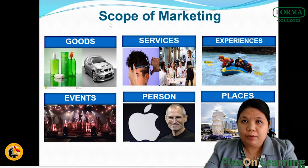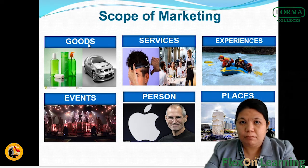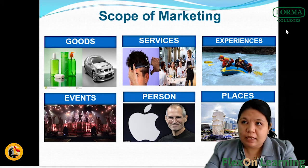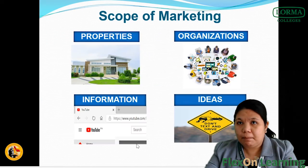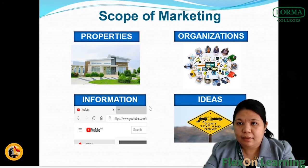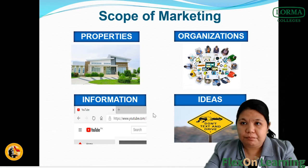Then we have also the scope of marketing. It involves goods, services, experience, events, personal, places, properties, organization, information and ideas. Everything that you can see here is a scope of marketing.